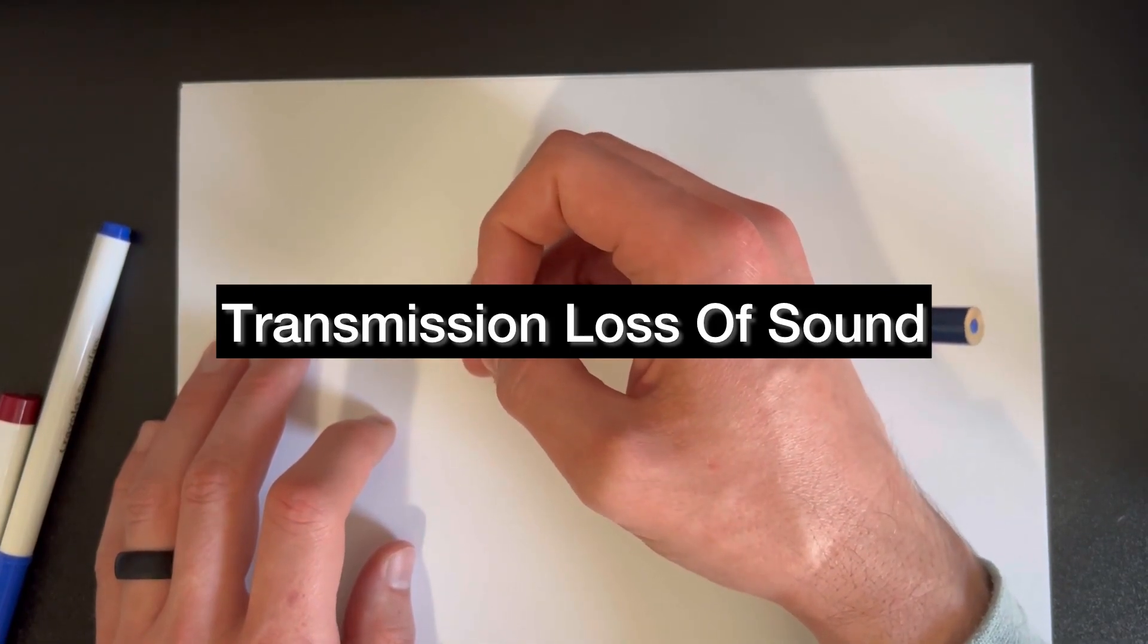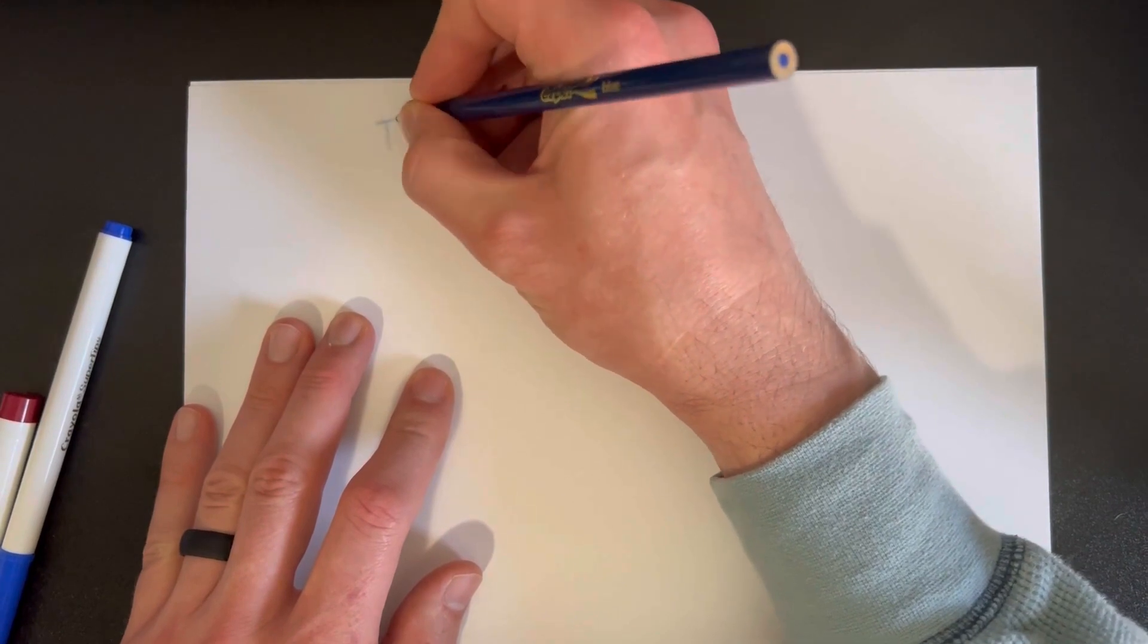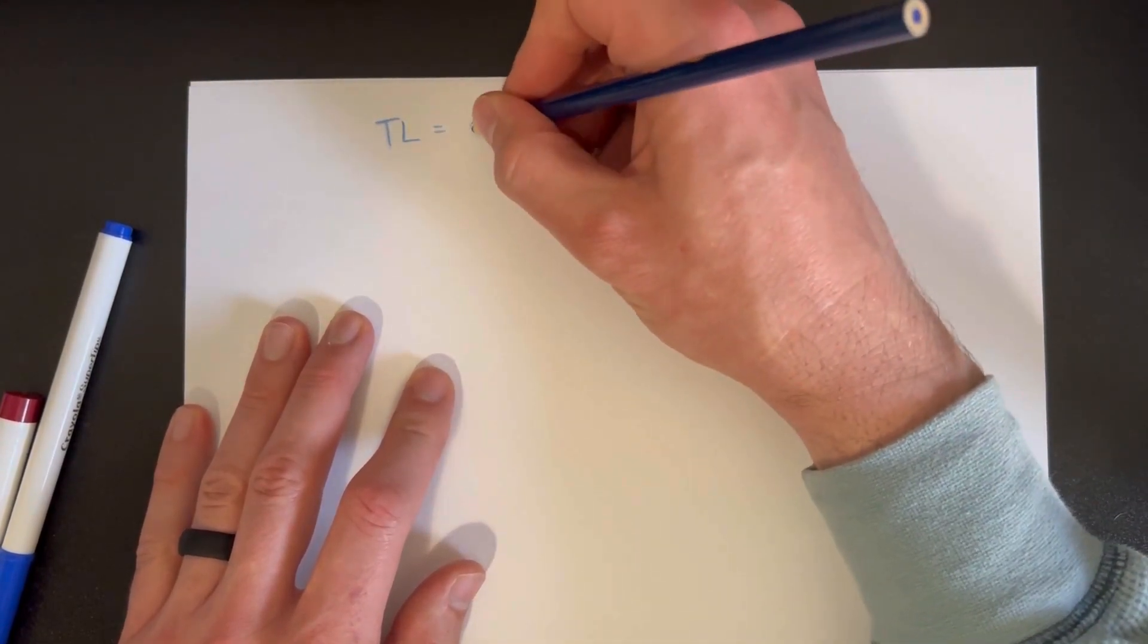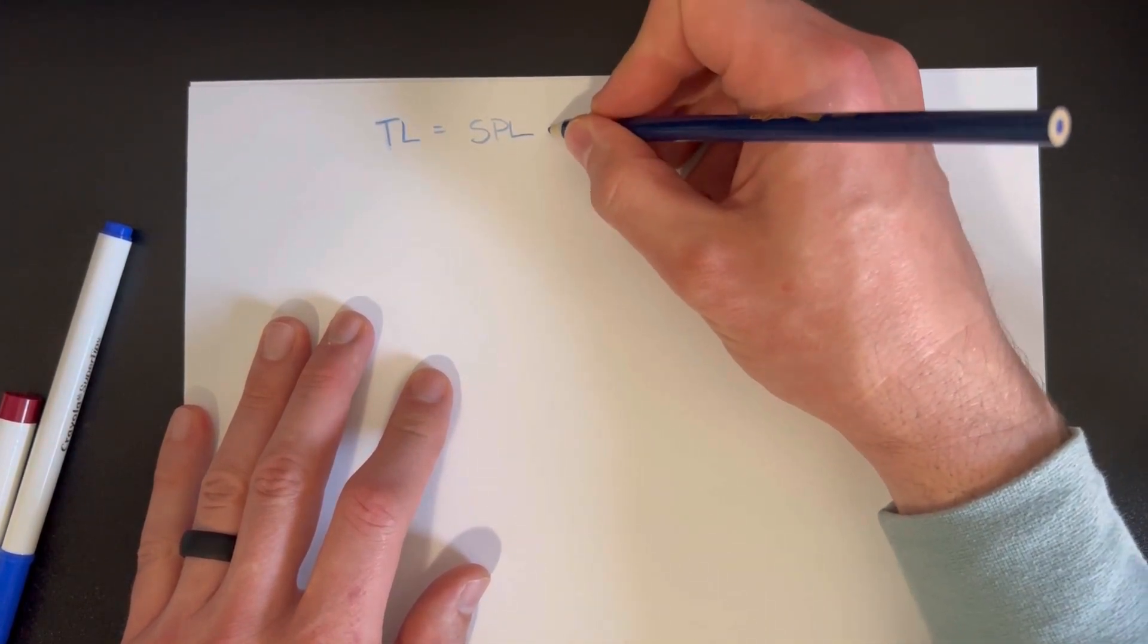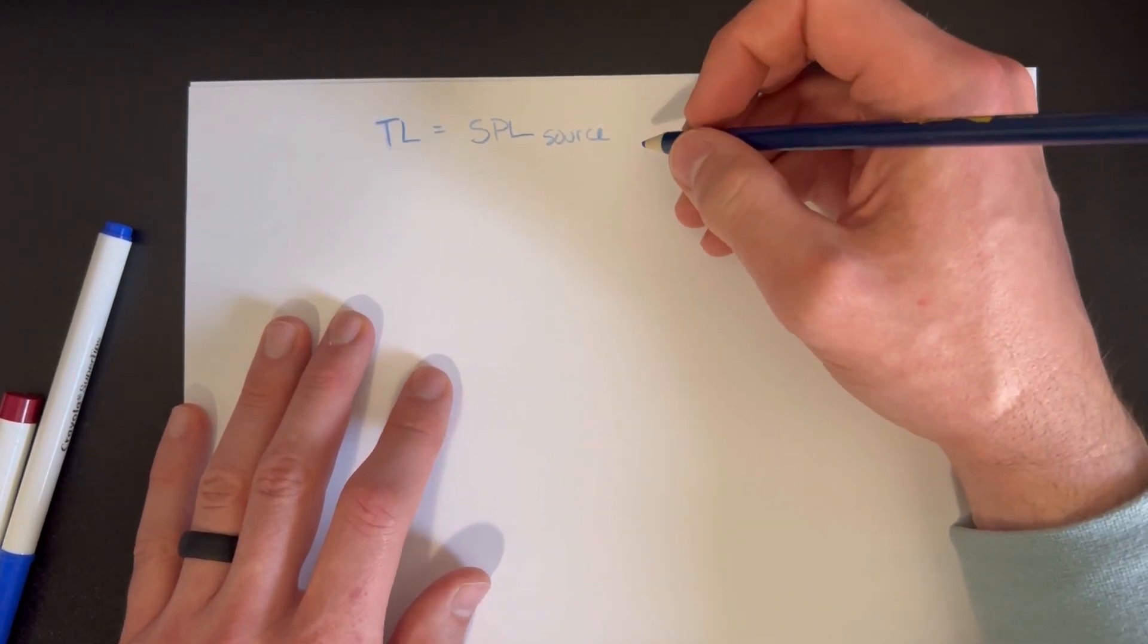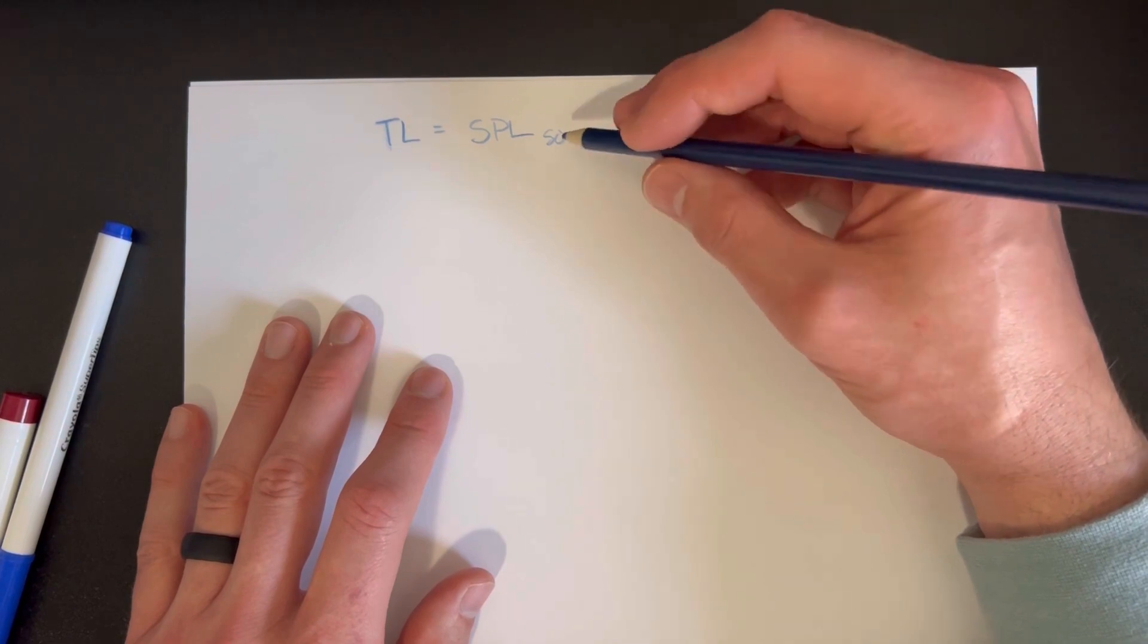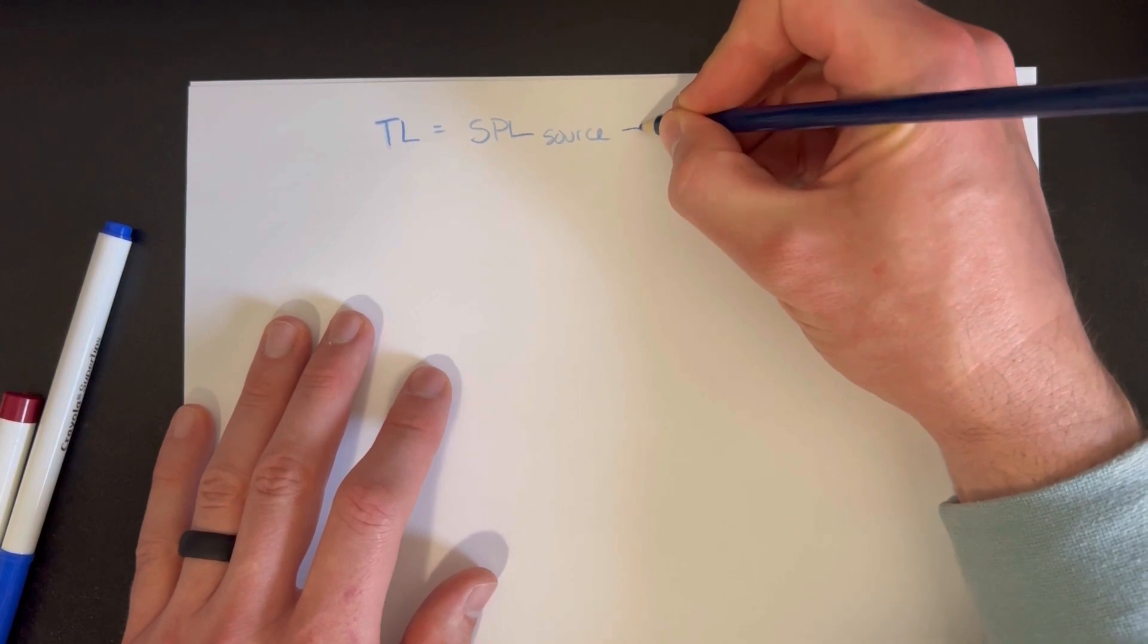Hey, it's Phil from Sound Assured, and today we're talking about transmission loss. Transmission loss is equal to the sound pressure level at the source side of the wall. So if the noise is coming from the outside of your house into your house, this would be the SPL on the outside of your house, and then you subtract that from the SPL at the receiver side.